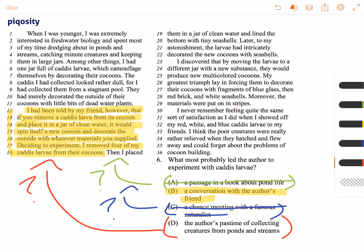So because that information is not there, we cannot choose D: the author's pastime of collecting creatures from ponds and streams that led him to experiment.